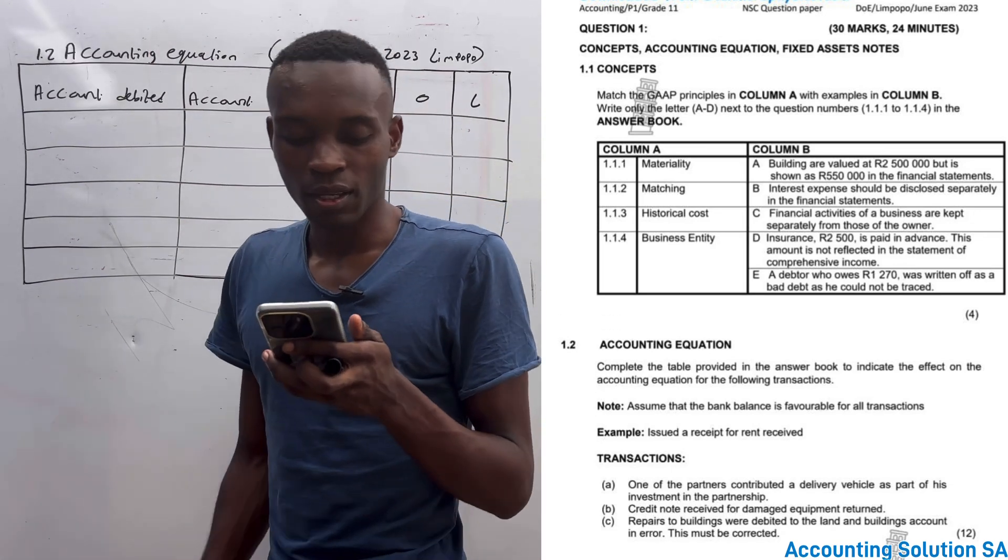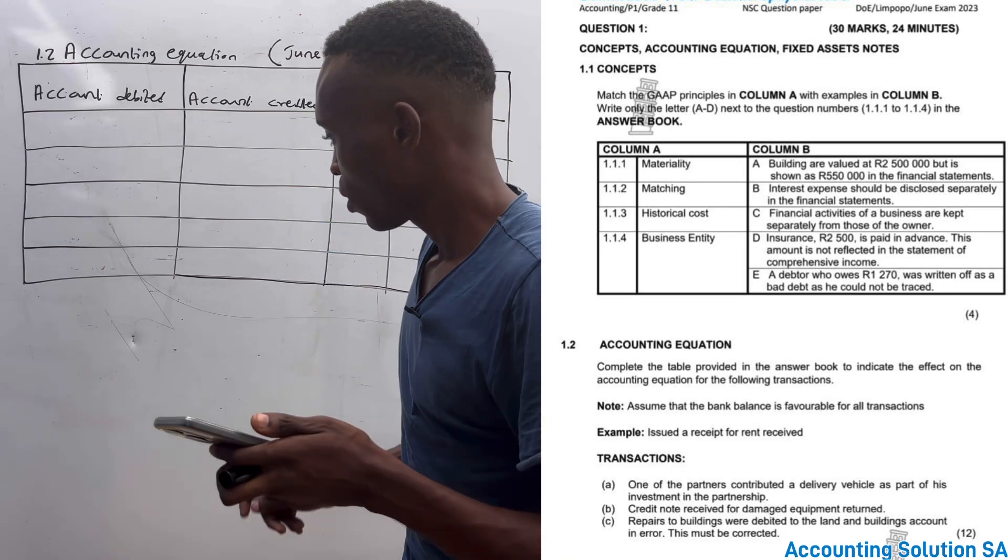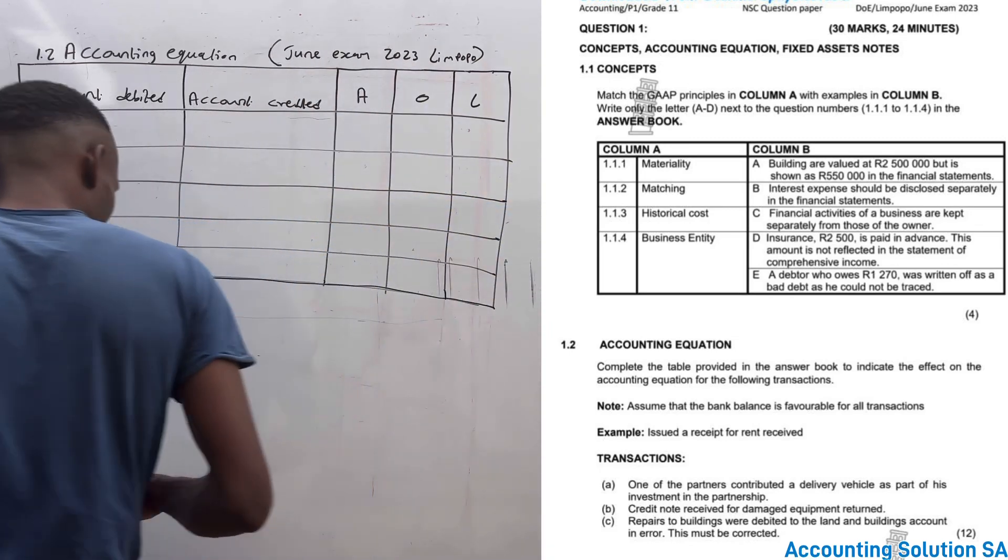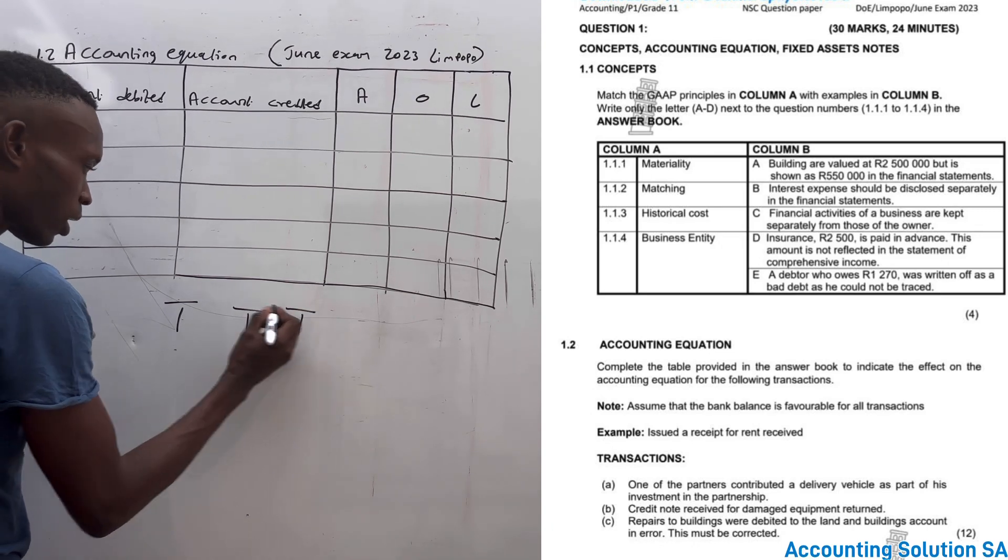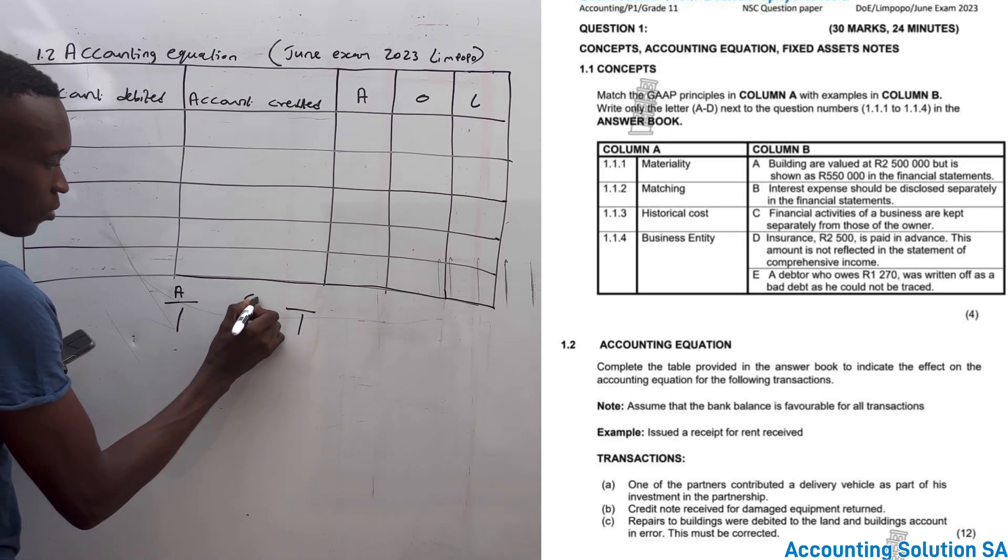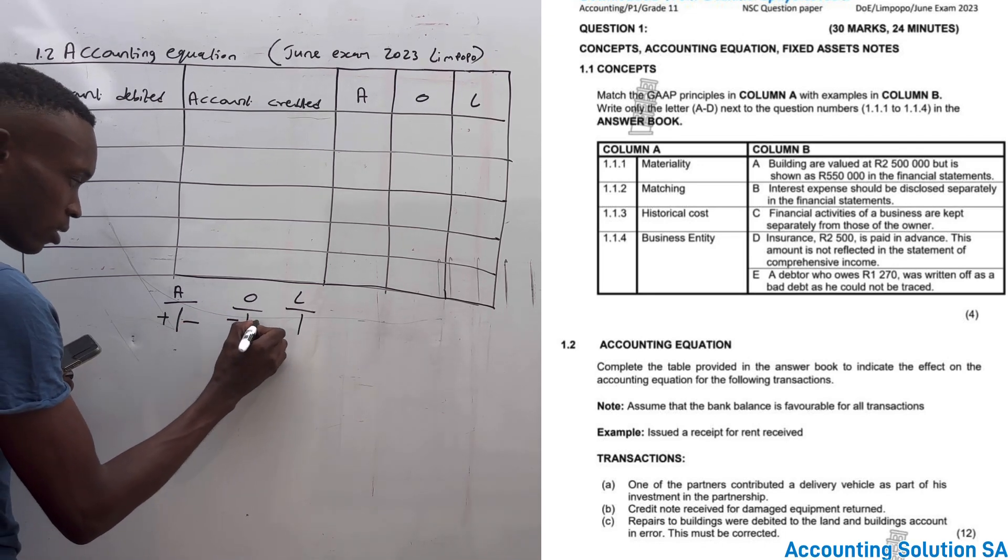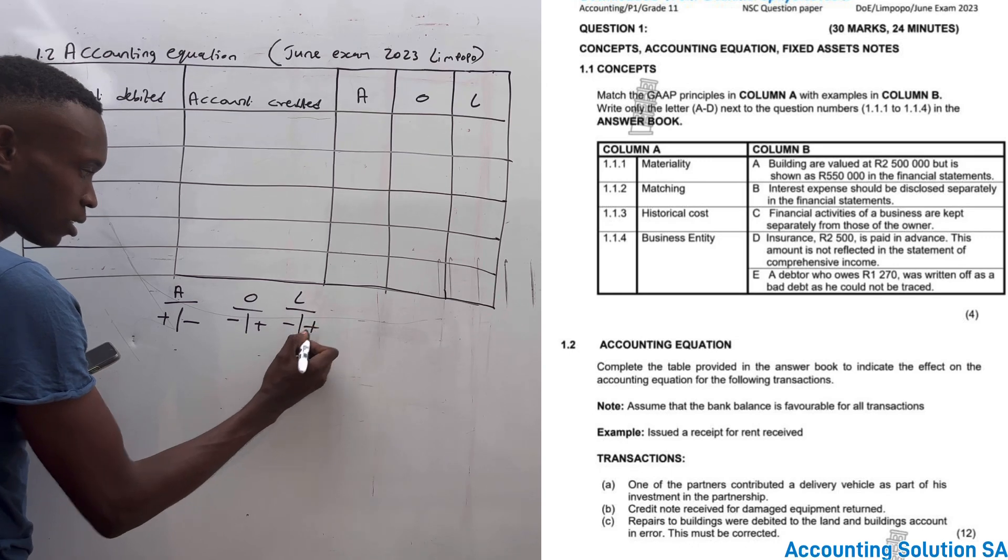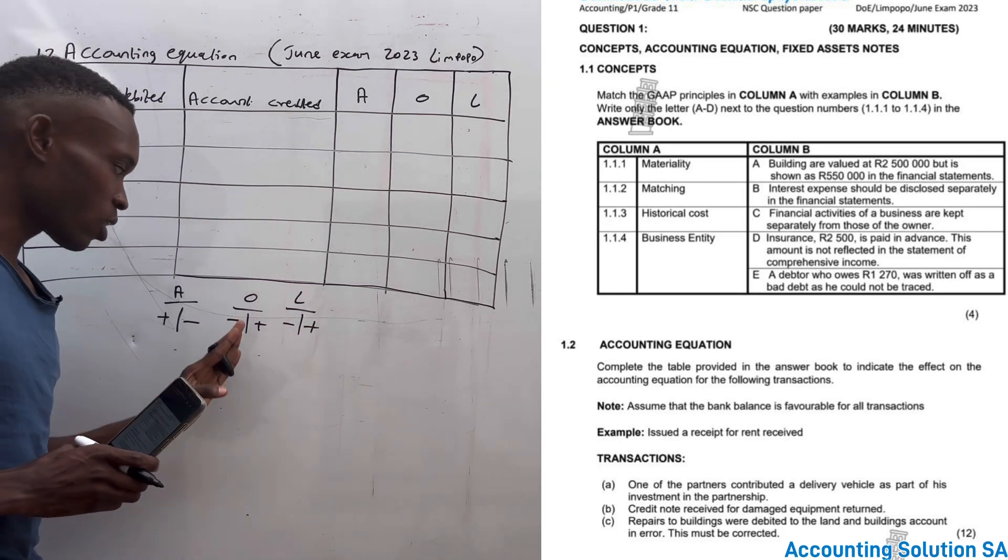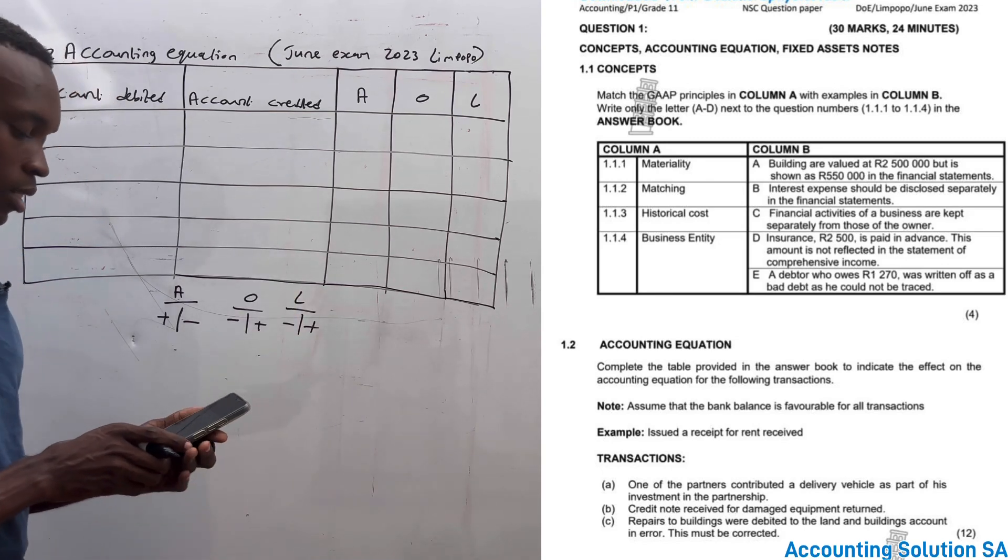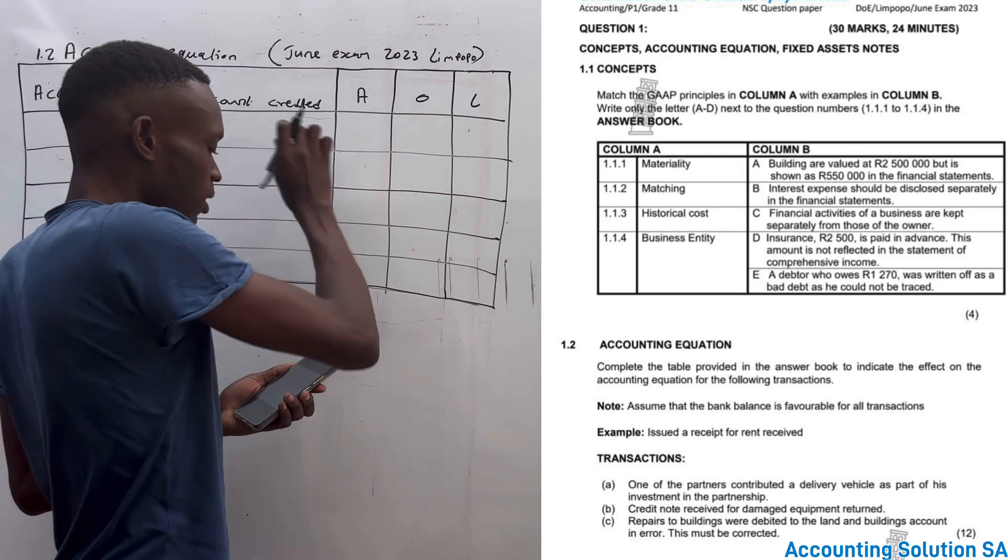The example says issued receipt for rental received. We are going to do the example as a practice question. What you need to know about accounting equation is the principle which you learned from grade eight: assets, owner's equity, liability - which assets increase this side, decrease this side. Make sure you know what falls under asset, what falls under owner's equity, what falls under liability. We have to pick two components in order for us to record debit and credit.